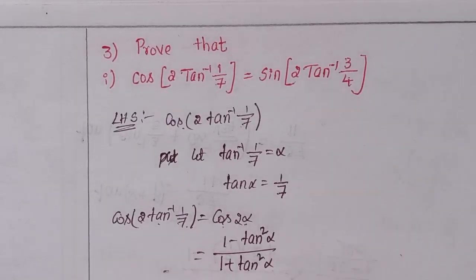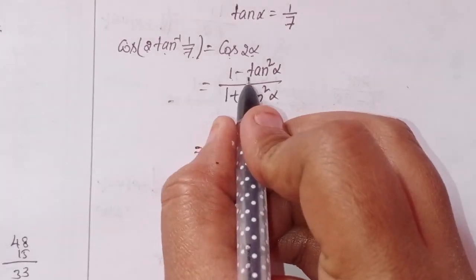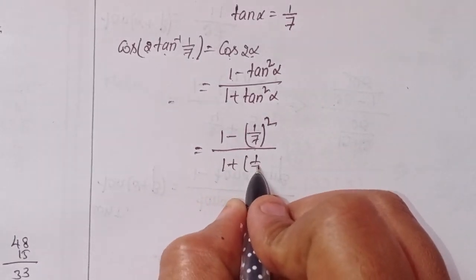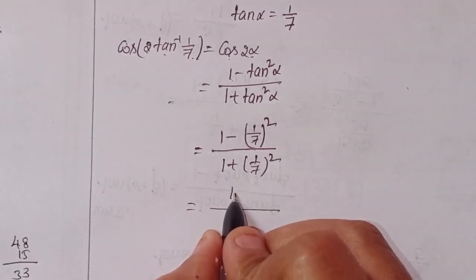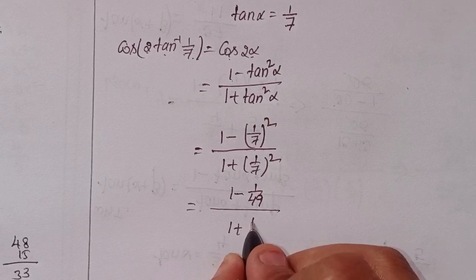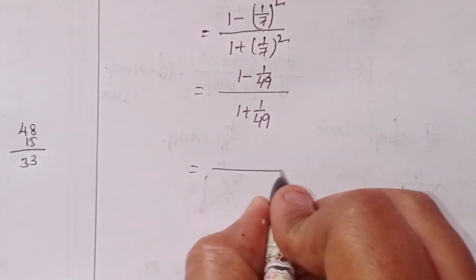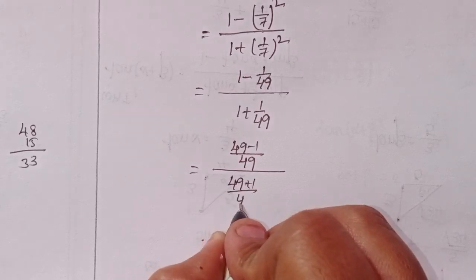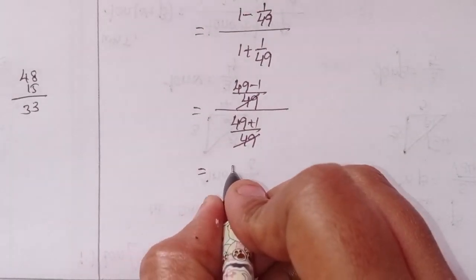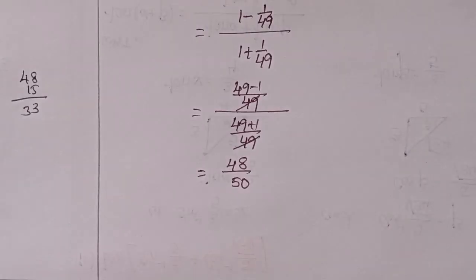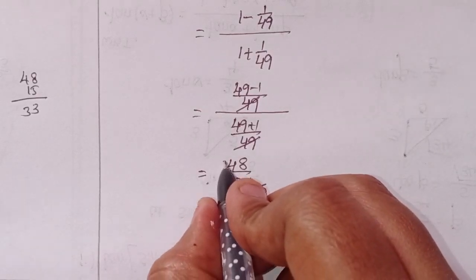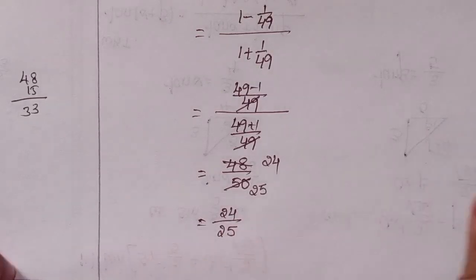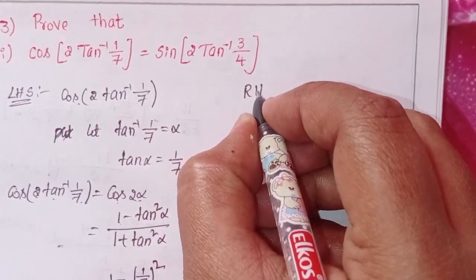Substituting tan alpha equals 1 by 7: we get 1 minus (1/7)² by 1 plus (1/7)², which gives 1 minus 1/49 by 1 plus 1/49. Taking LCM as 49: we get (49 minus 1) by (49 plus 1), the 49 cancels, giving 48 by 50. Simplifying: 24 by 25. So LHS equals 24 by 25.